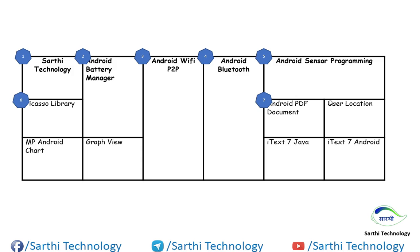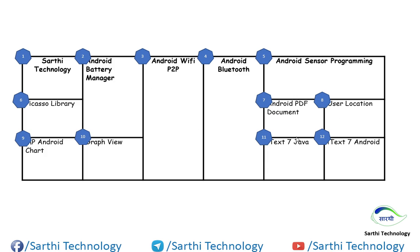Then this will be 8, then 9, then this will be 10. Now we cannot count this as 11 because it is already used. So this is 11 and this is 12. So what we need to do is add 12 cells in the table.